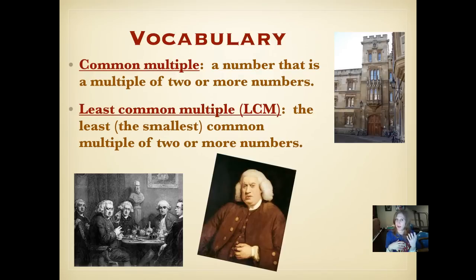So anytime you would multiply, like the number 8, 8 could be multiplied by 1, and then you have a multiple of 8. 8 times 2 is 16, 16 is a multiple of 8. 8 times 3 is 24, 24 is a multiple of 8. So a common multiple is one that two numbers share. The least common multiple is the least or the smallest common multiple of two or more numbers. And there's Samuel Johnson where he went to college right there in London or England.